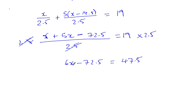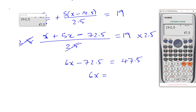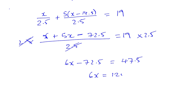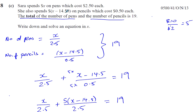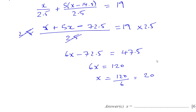Now we can add 72.5 to both sides. So 6X is going to be 47.5 plus 72.5, which gives us 120. So 6X equals 120, meaning X must be 120 divided by 6, which is 20. So X equals 20. X, remember, is the amount that she spent on pens.